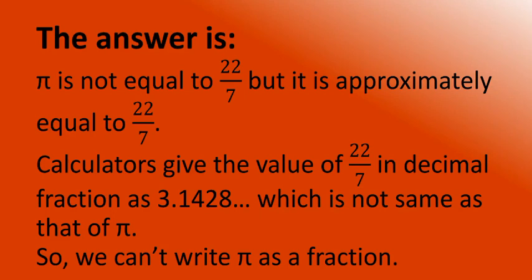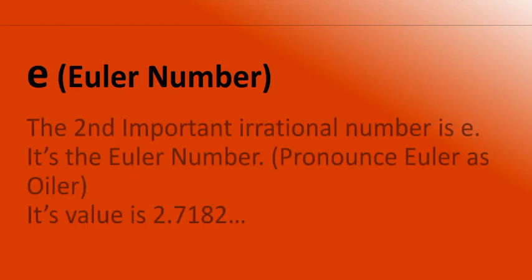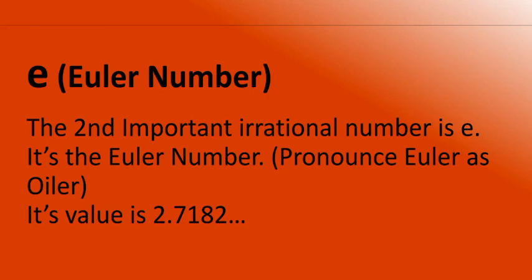Calculators give the value of 22/7 in decimal form as 3.1428 and so on, which is not the same as that of pi. So we cannot express an irrational number in fractional form. The second important irrational number is E, the Euler number — pronounced E-U-L-E-R as 'Euler' — whose value is 2.7182 and so on.